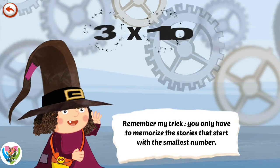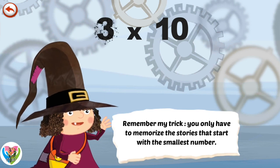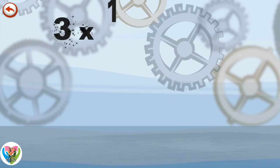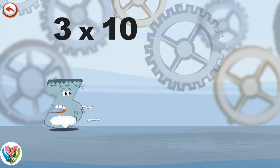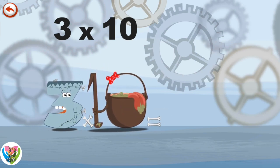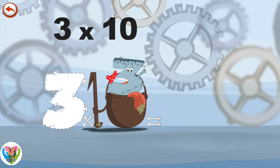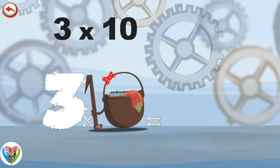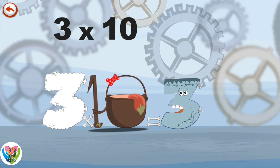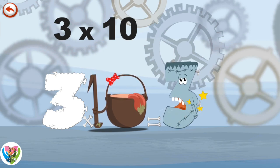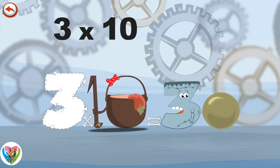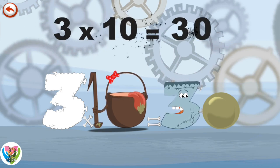Remember my trick. You only have to memorise the stories that start with the smallest number. What's the story of 3 times 10? When 3 meets the potion Magi 10, it makes him very, very hungry. He dives headfirst into the cauldron and comes out feeling very full. He gives an enormous magic burp and blows a bubble in the shape of a zero. 3 times 10 is 30.